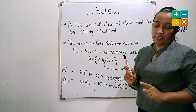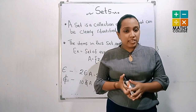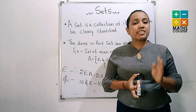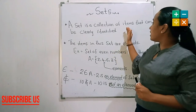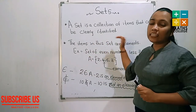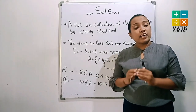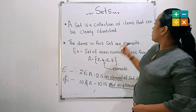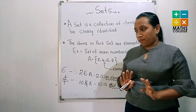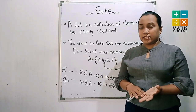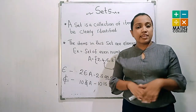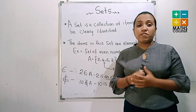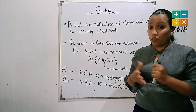Lesson 6. You have already learned about the set lesson in the previous grade. First, look at it. What is a set? A set is a collection of items that can be clearly identified. As examples, consider the even numbers less than 10, odd numbers, the vowels of the English alphabet, and the days of the week. These are examples of sets.